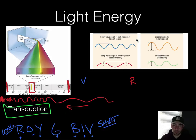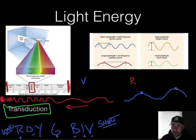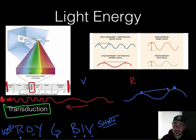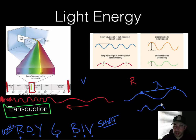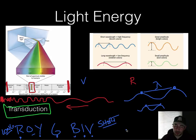How bright or dull a color is is determined by a wave's amplitude. The wavelength is measured from one crest of a wave to another — represented by the symbol lambda. A wave with a longer wavelength versus a shorter one — that's how you measure one part of the wave.